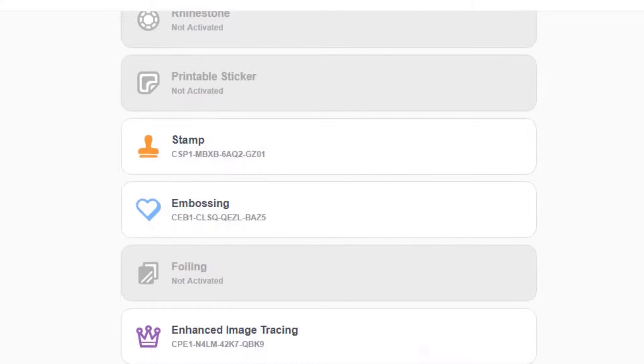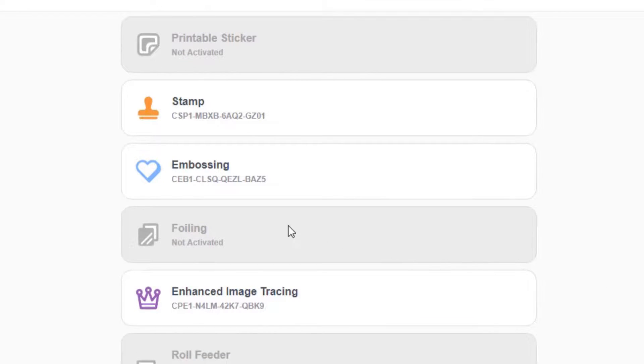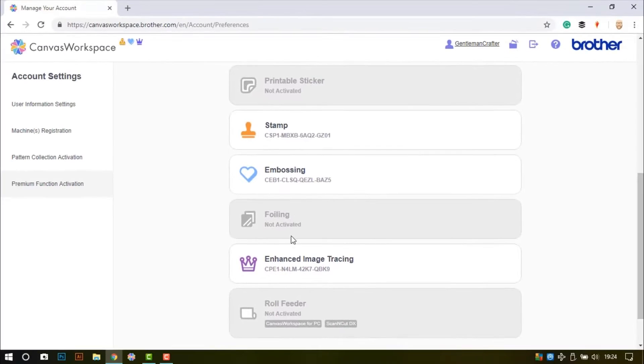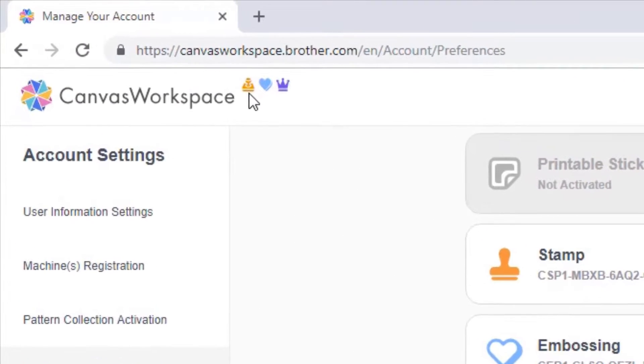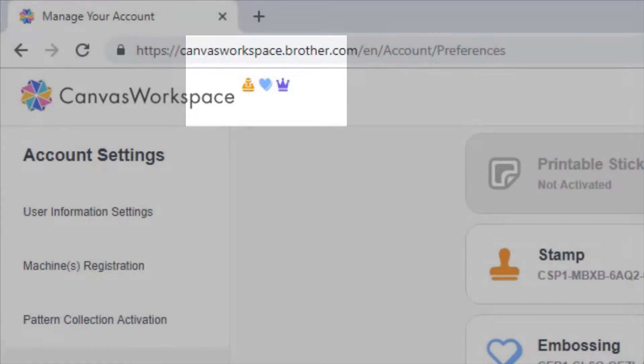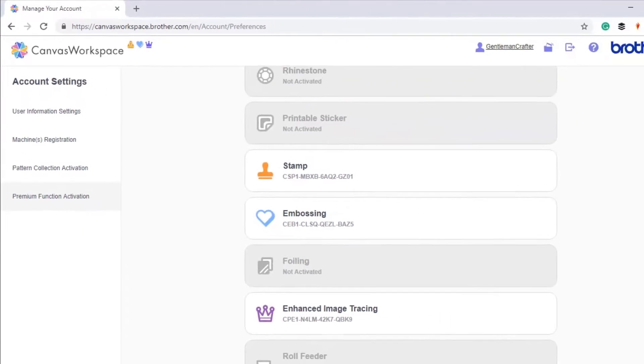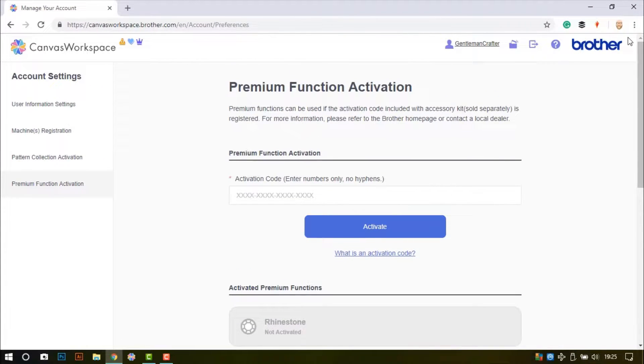Now I already have mine activated as you can see here. Also at the top left of the screen icons will appear for each kit that you have registered. Next I will show you the 50 bonus designs that will be unlocked once you have activated this kit.